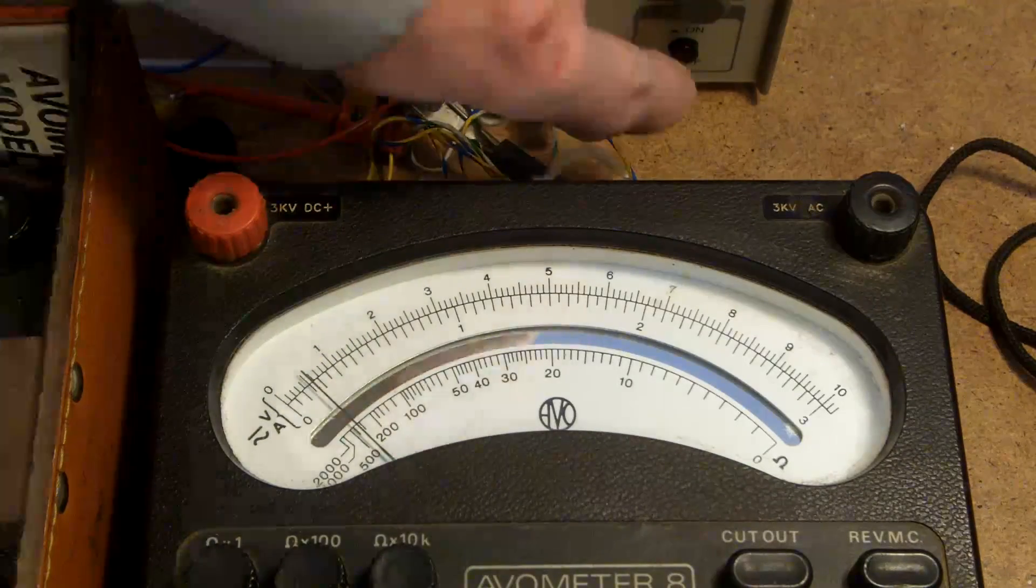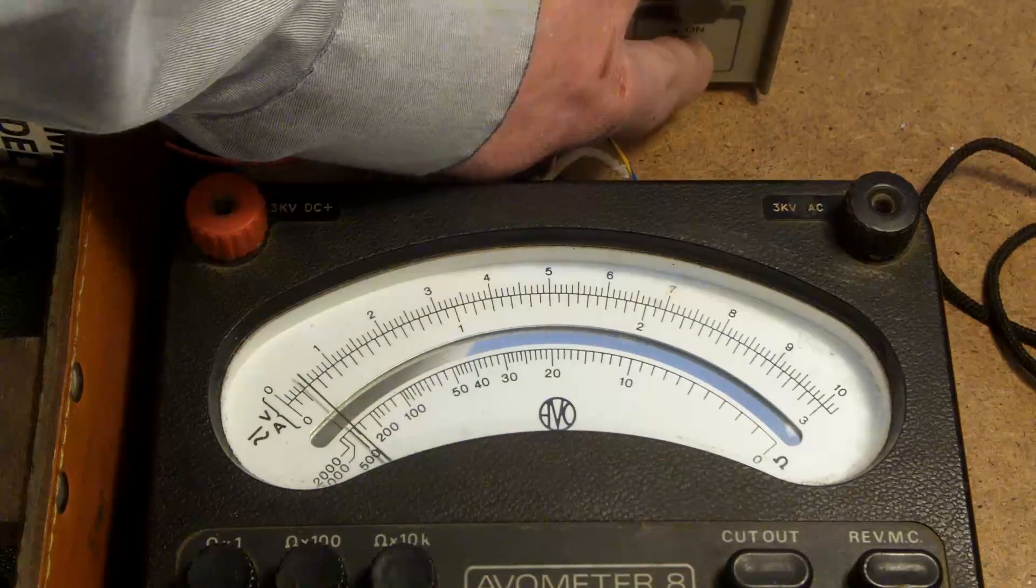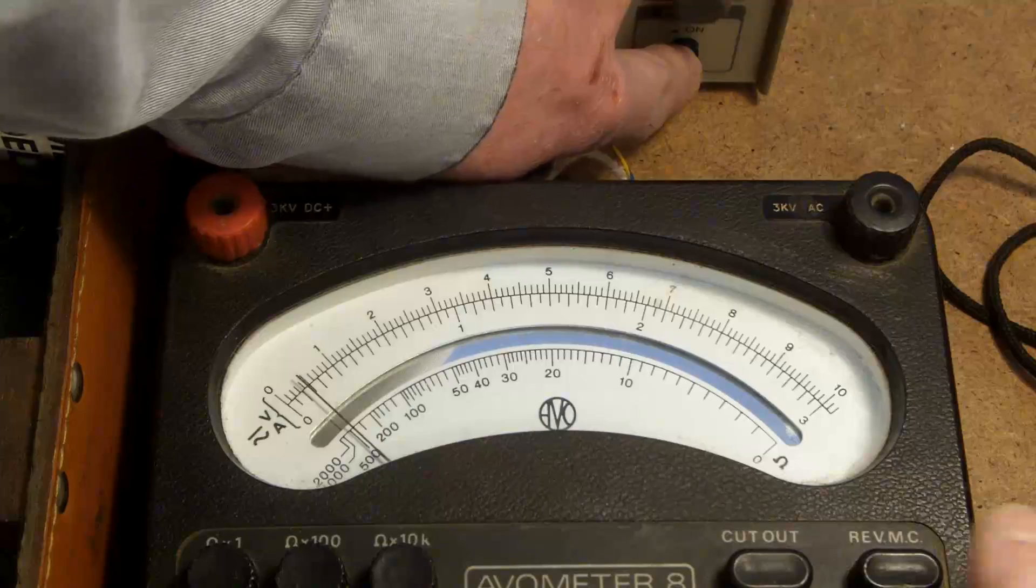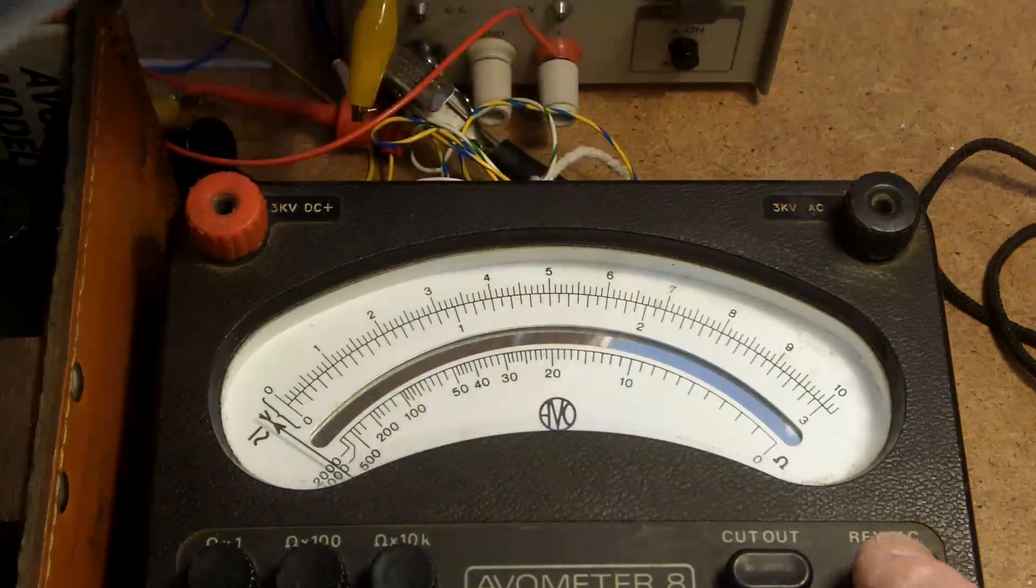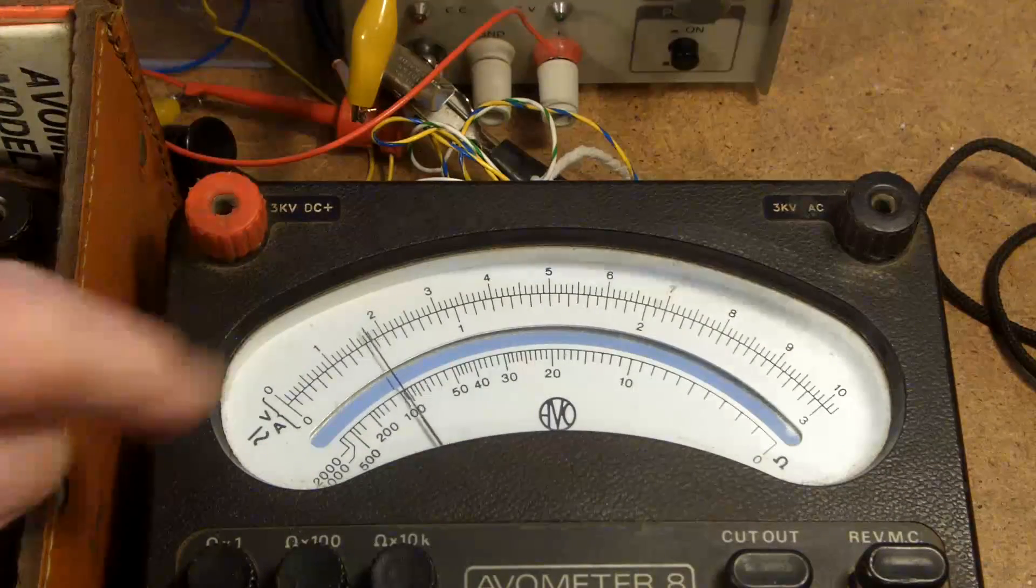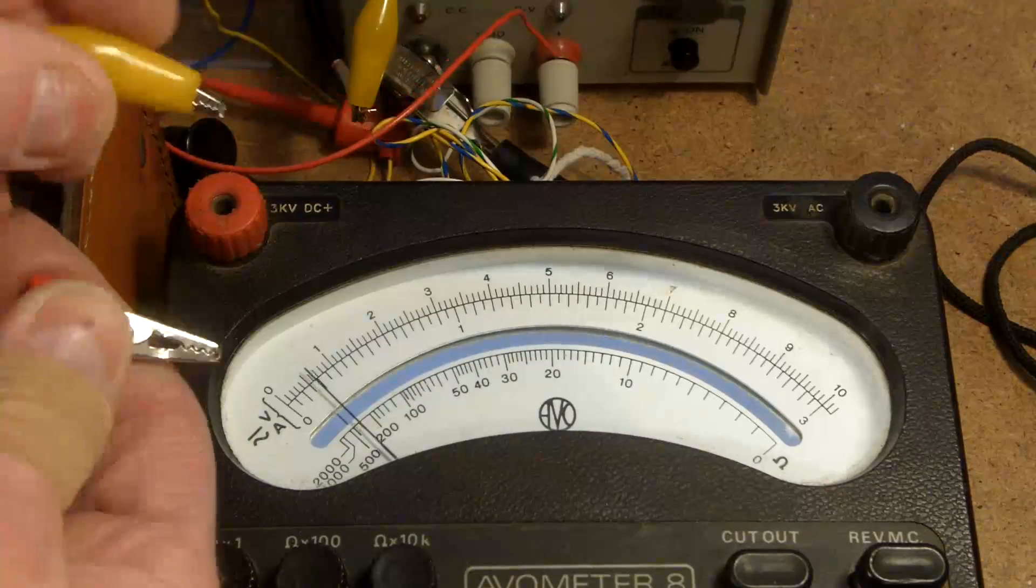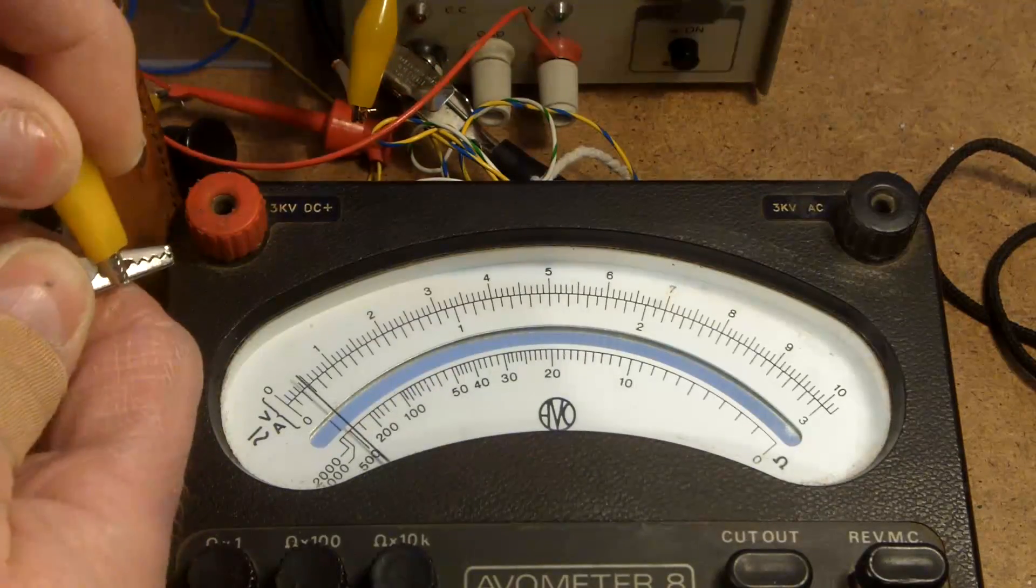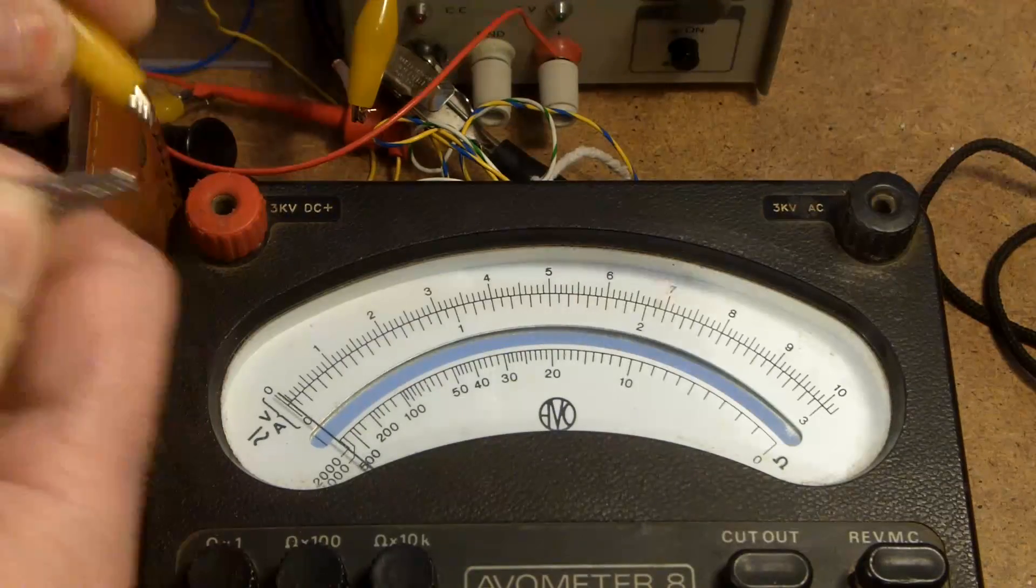And now when I switch it off, you'll see the meter go over to the left. And I'm going to press this other button. So first of all, power off, reverse the meter. And then these two crocodile clips are across the cell. And I short that out. And you see it recovers.